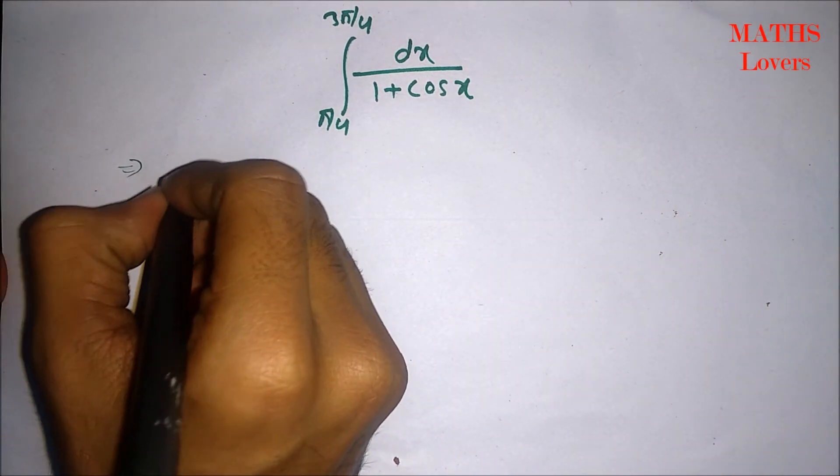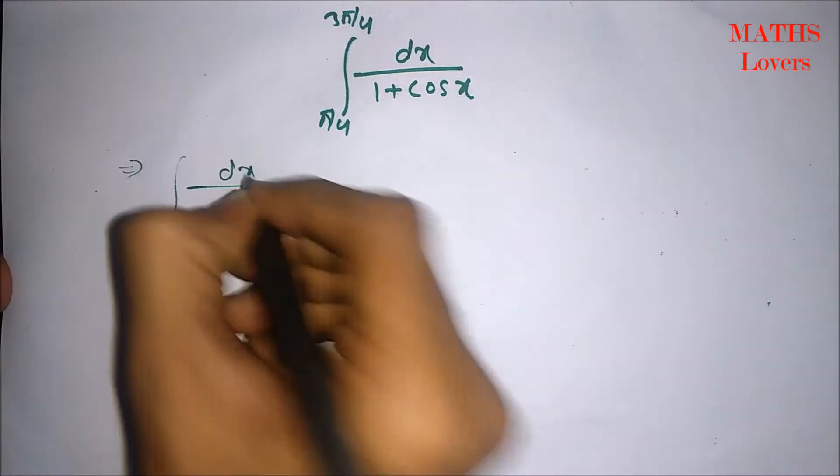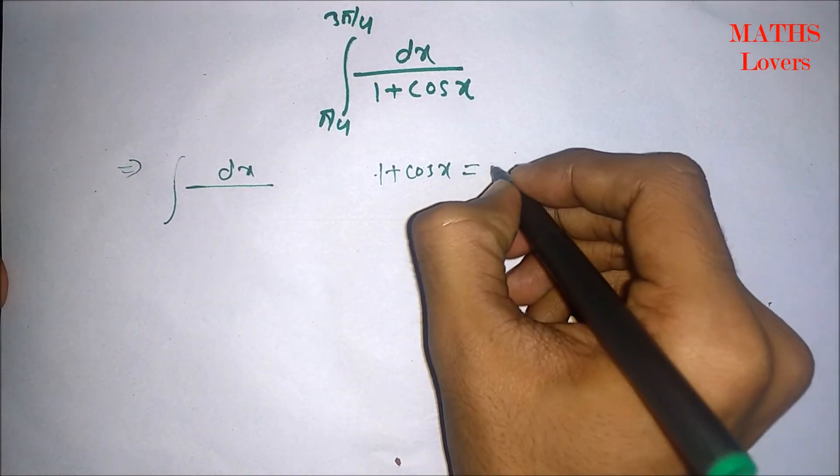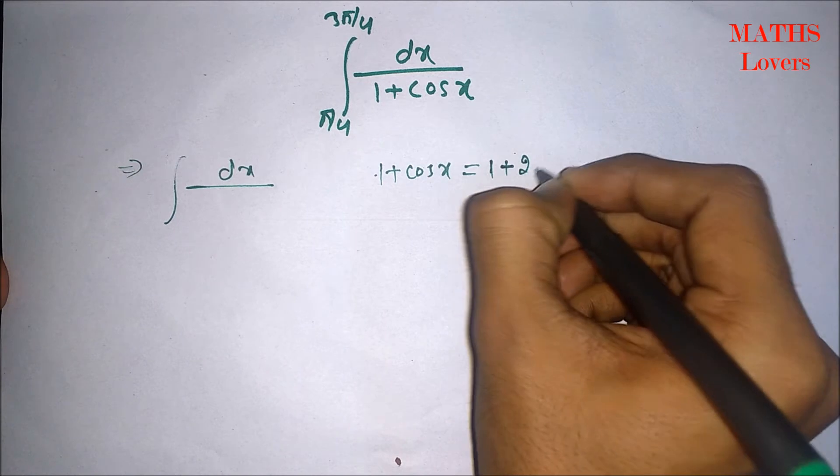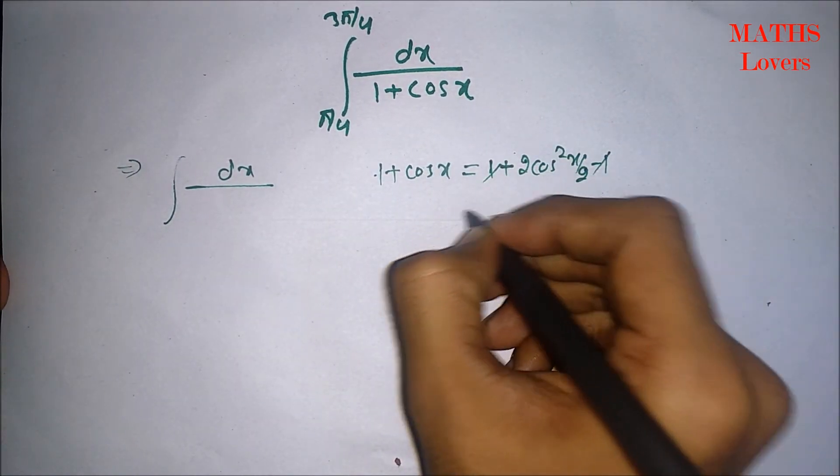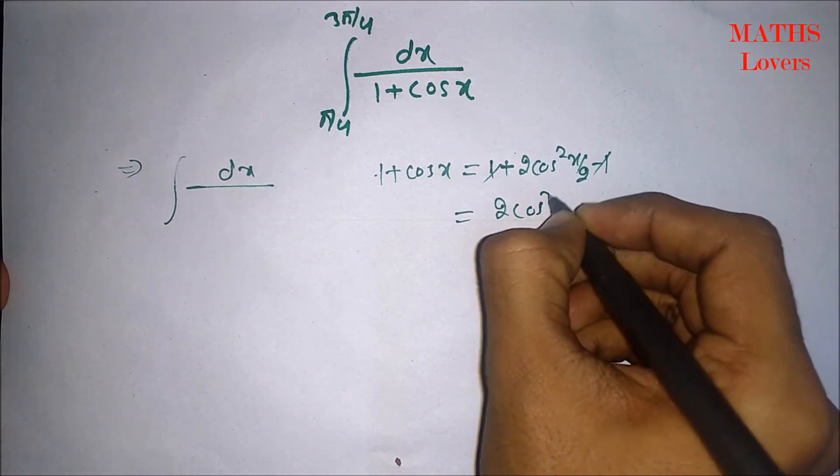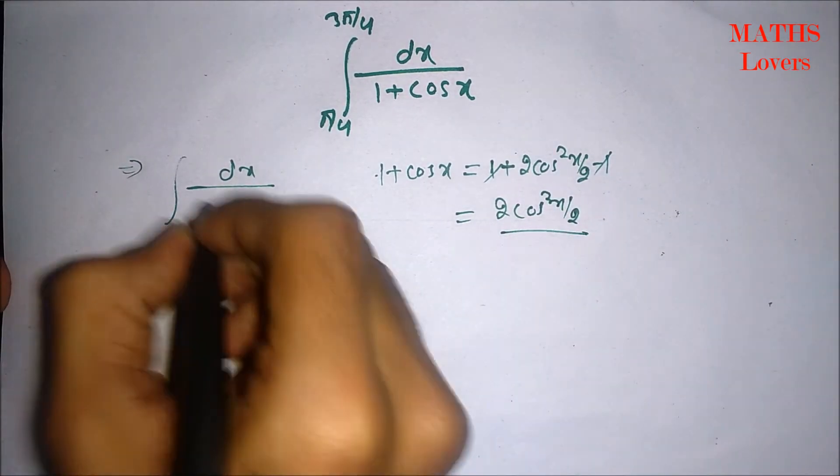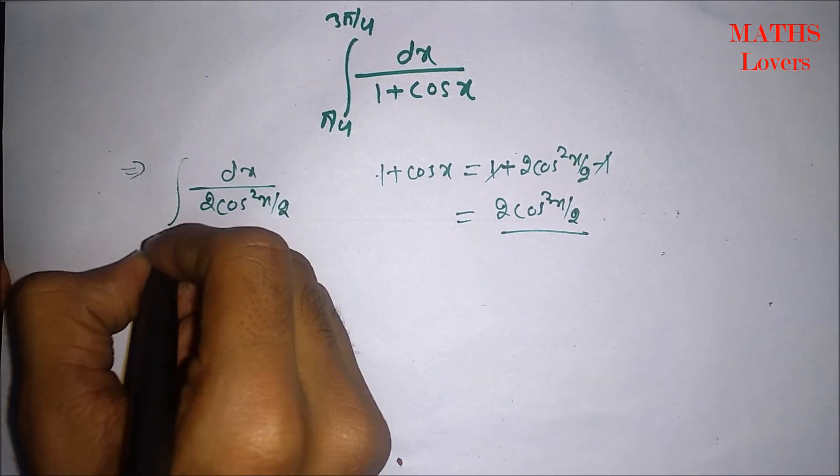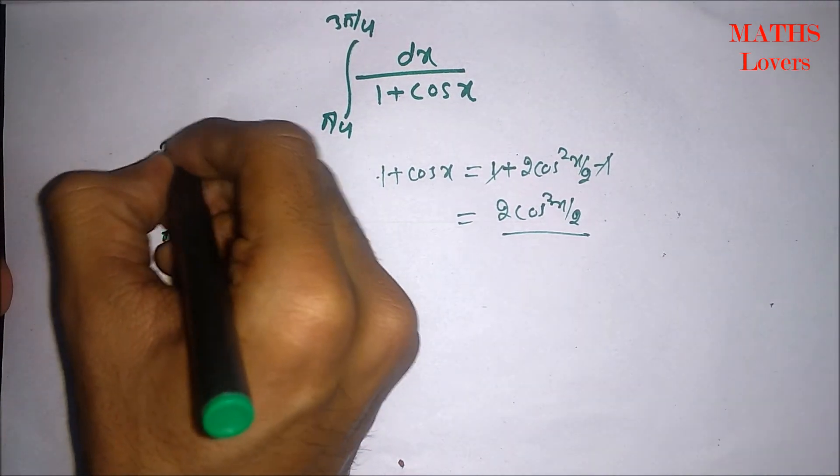First method: we know that 1 plus cos x can be written as 1 plus 2 cos square x by 2 minus 1. So, minus 1 will be cancelled out. It will become 2 cos square x by 2. So, if we put it here, we will get x by 2 and pi by 4 and 3 pi by 4.